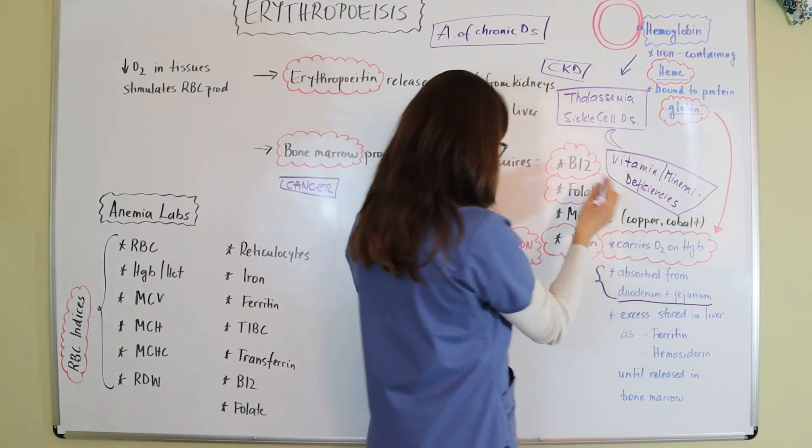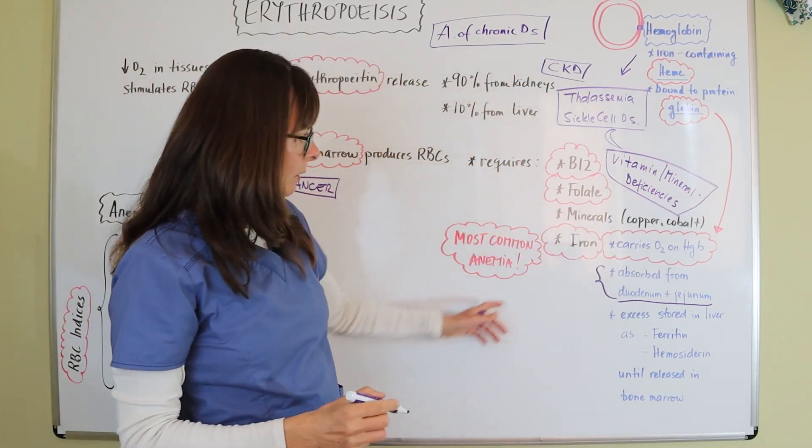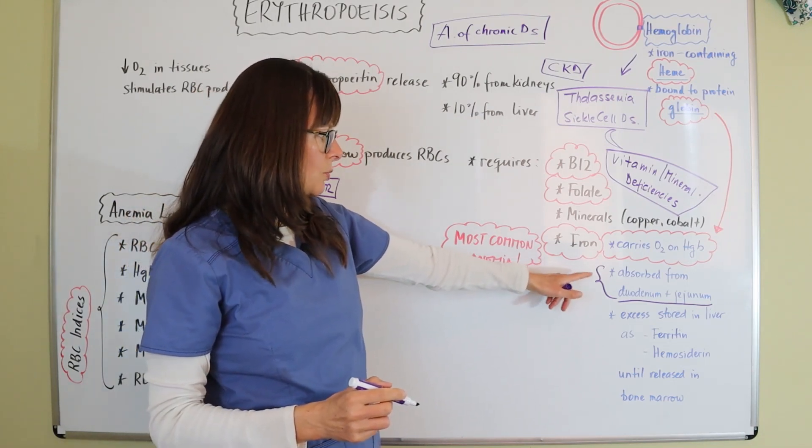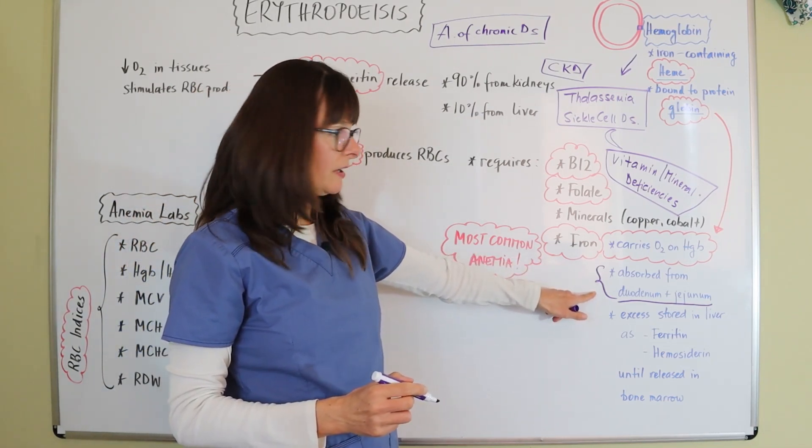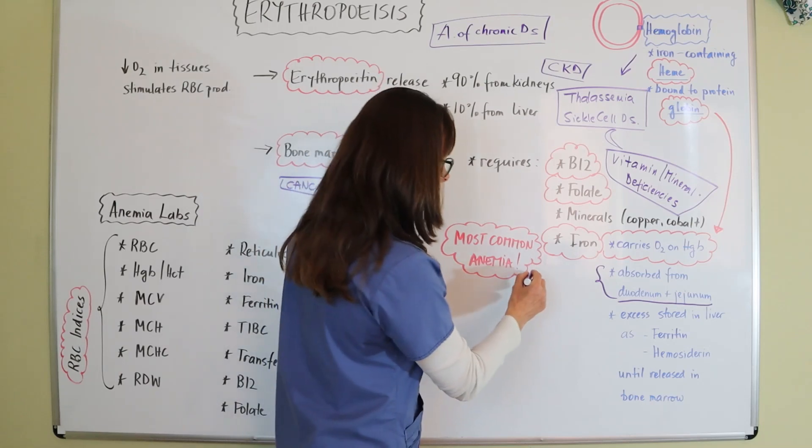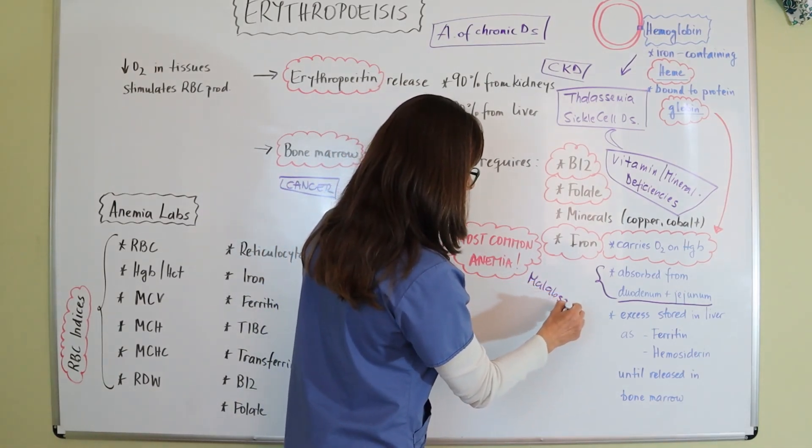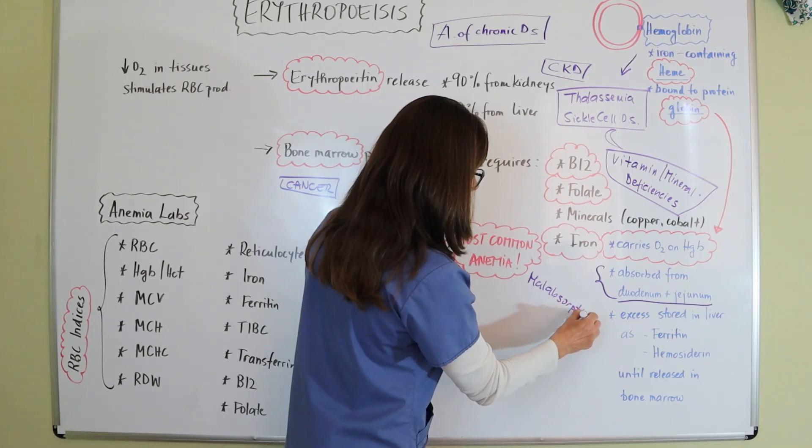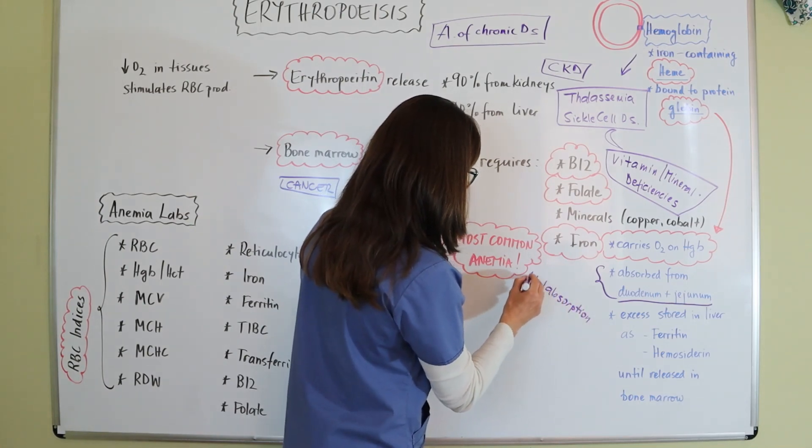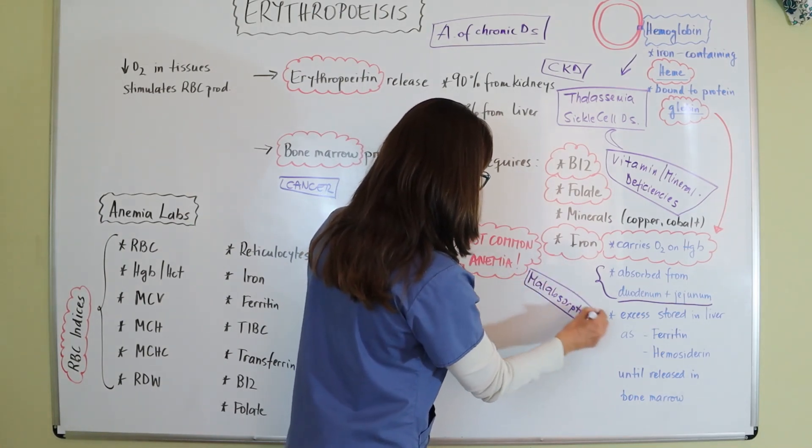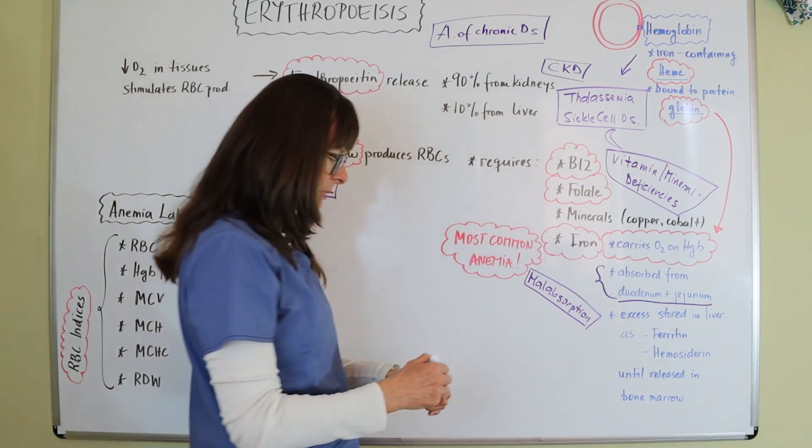And then we have the names again. And then think about, we talked about that iron is absorbed from the small intestine here. If we have some sort of malabsorption disorder, whether that is maybe a patient after some sort of GI surgery or maybe a gastric bypass.